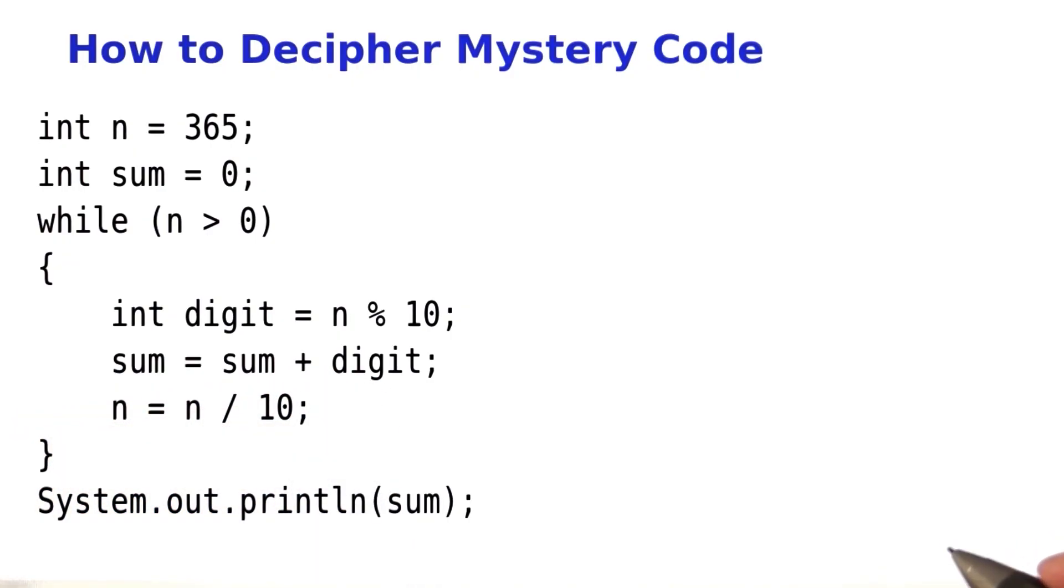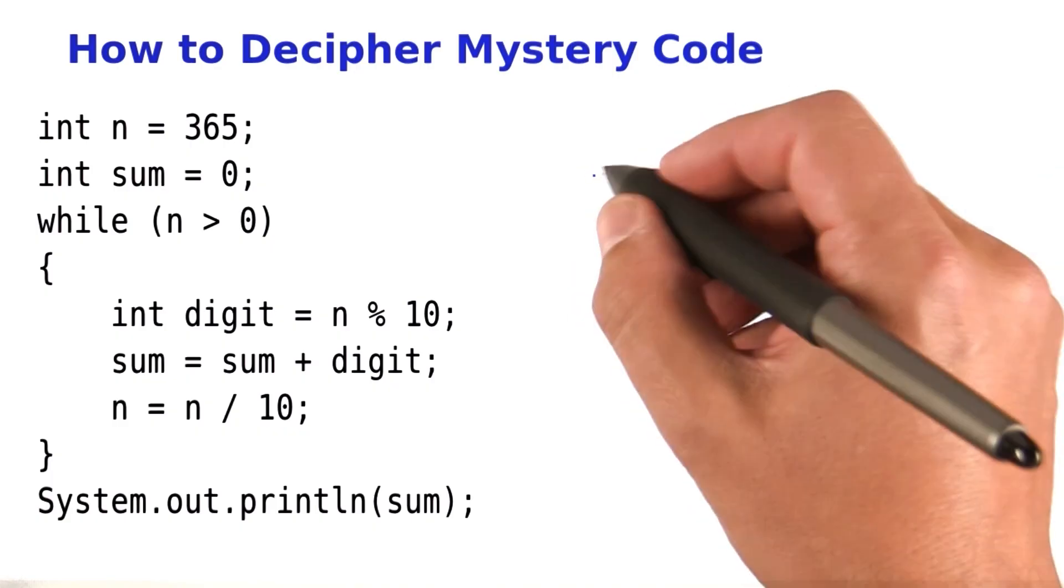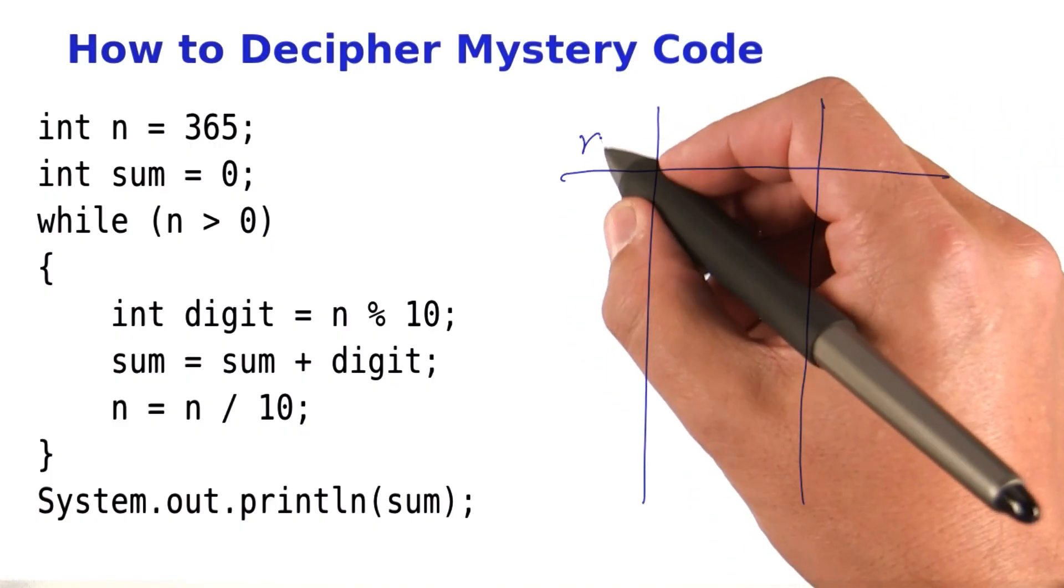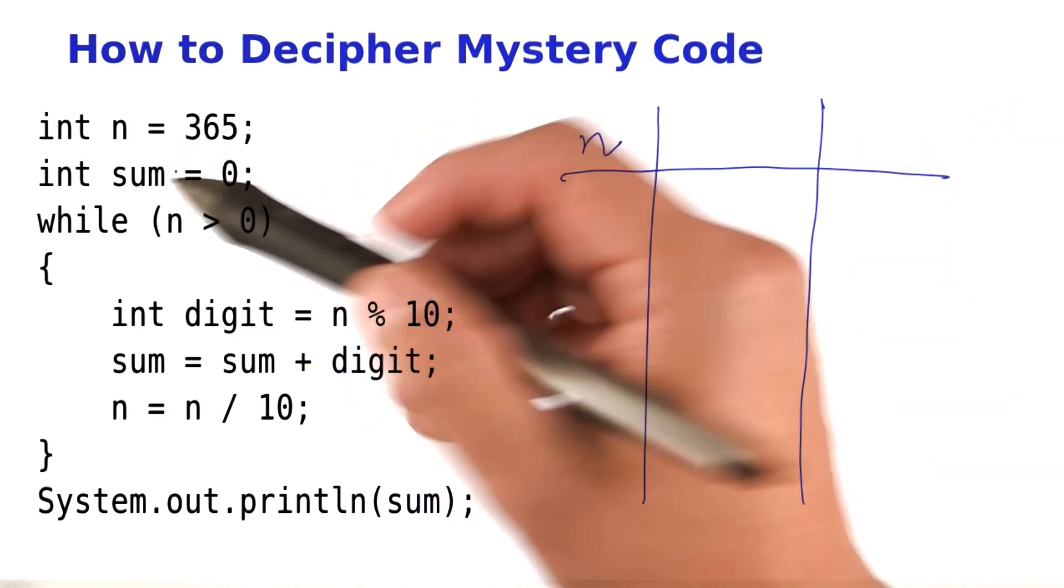So let's see what this code does. What you always want to do is get out a sheet of paper. Here's my sheet of paper. You make a table, one column for every variable. There's a variable n, there's a variable sum.